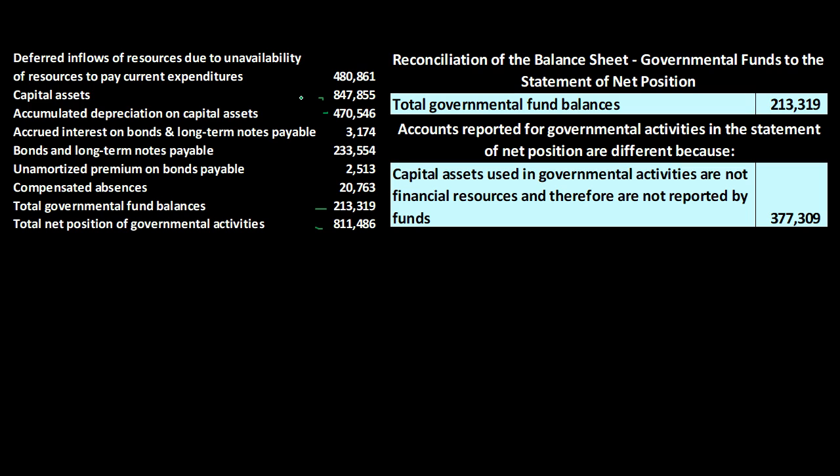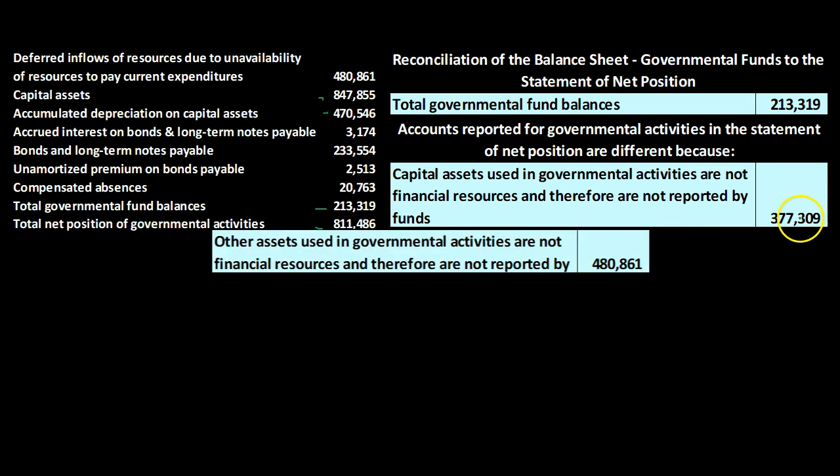On the accrual basis at the government-wide level, capital assets and accumulated depreciation are on the books as expected — property, plant, and equipment type assets with related accumulated depreciation. On the modified accrual basis, we don't have long-term assets, and capital expenditure purchases may be recorded as a flow-type activity, more similar to an income statement activity.